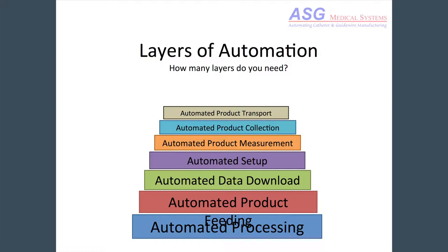This slide shows seven layers, starting with the most basic level — automated processing — up to the top layer, which is automated product transport. We're going to look at each one of these briefly.